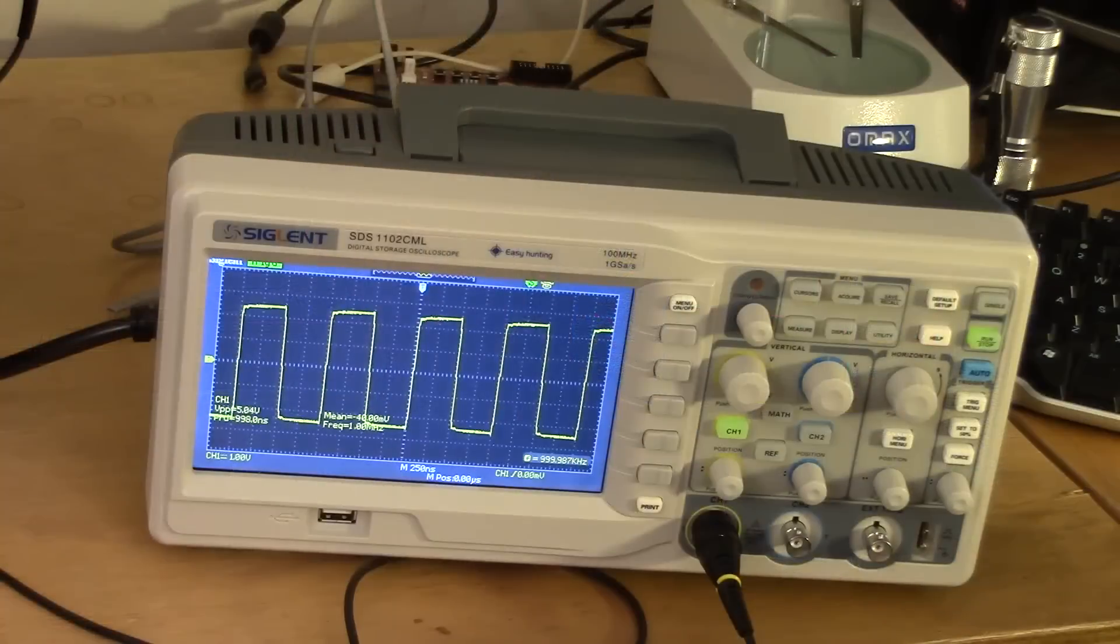Recently though, several vendors have offered some tremendously capable scopes for half that price, and today we're going to look deeply into one of these. This is Siglent's SDS-1102-CML digital oscilloscope. It's a 100 megahertz scope that costs an amazing $379.